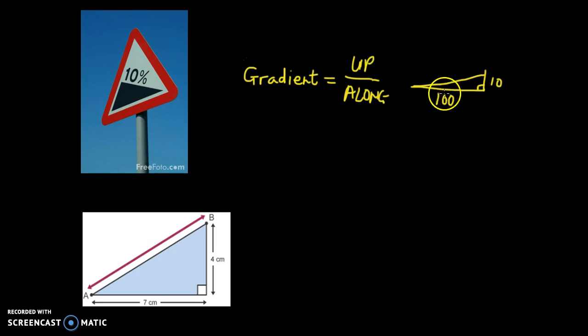For every amount you go along, it's 10% up. This is what this sign means. If you went along 10, you'd go up 1.